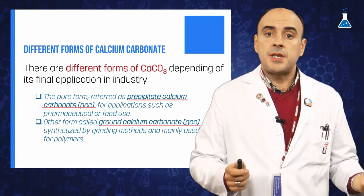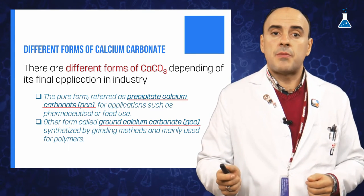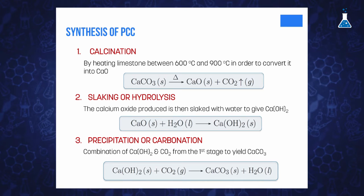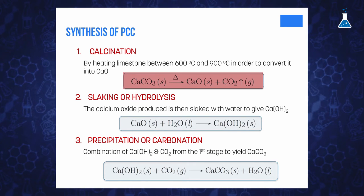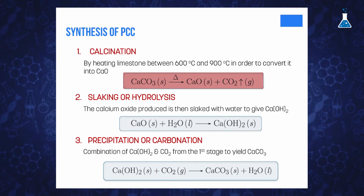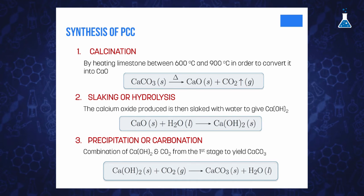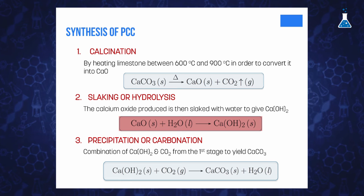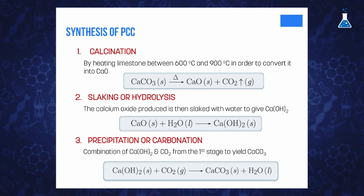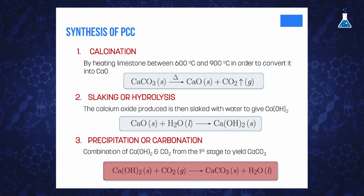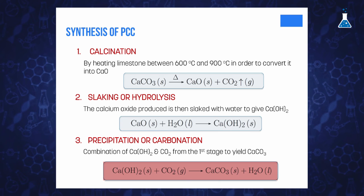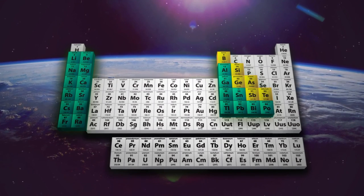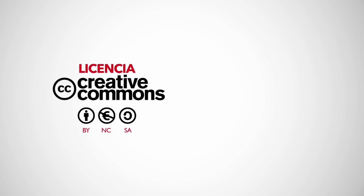The synthesis of PCC is an interesting process involving three major steps to obtain a product with specific properties. The first step is calcination, where limestone is converted into calcium oxide by heating between 600°C and 900°C. The second step is slaking or hydrolysis, where the calcium oxide produced is slaked with water to give calcium hydroxide. The third step is precipitation or carbonation, where calcium hydroxide is combined with the carbon dioxide produced in the first step to give a suspension of calcium carbonate and water, which is finally separated by filtration.